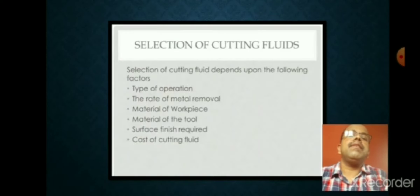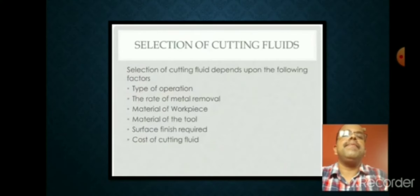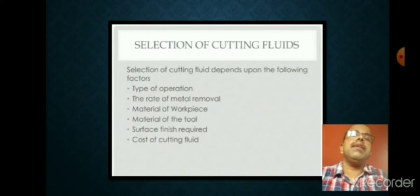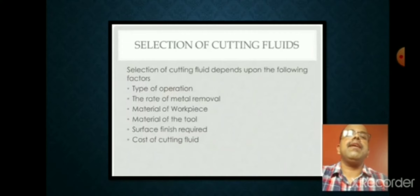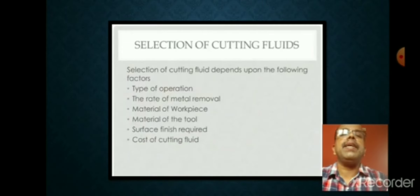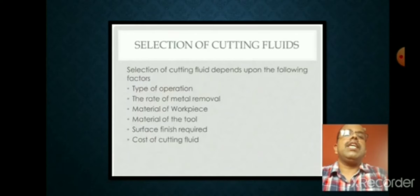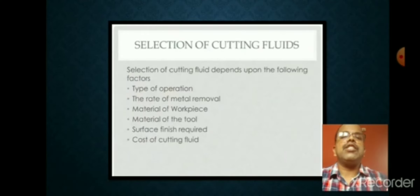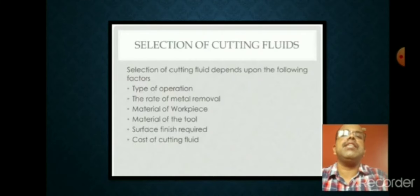Third factor is material of workpiece - whether it is ferrous or non-ferrous. Ferrous means MS, EN, HNS, or high carbon steel. Non-ferrous means aluminum, brass, or nylon. Fourth factor is material of the tool - for harder material you will use carbide bit, for soft material like MS you will use HSS tool. Fifth factor is surface finish required - whether smooth, dead smooth, or rough.